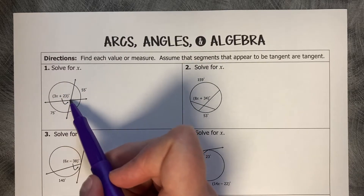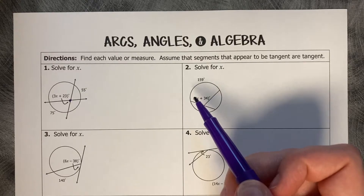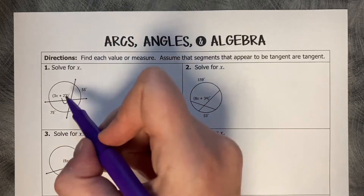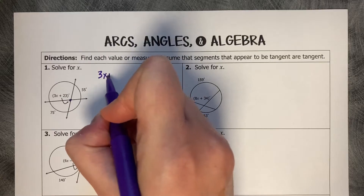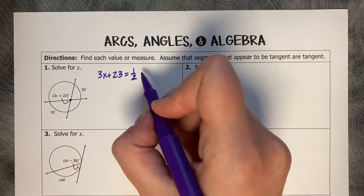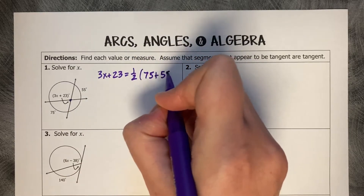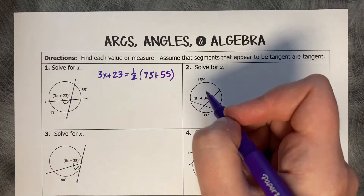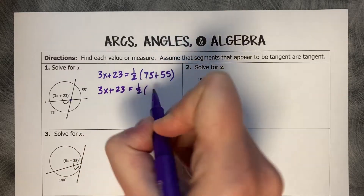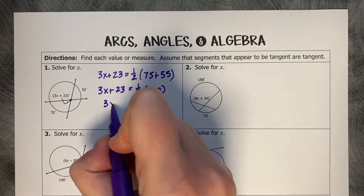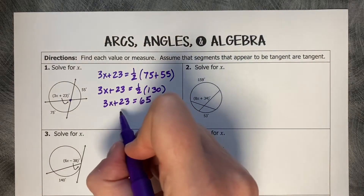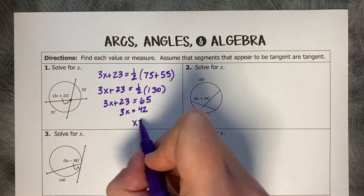x is inside of this interior intersection. If it's interior, it's add — you add their corresponding angles and cut it in half. So our interior angle is 3x plus 23, which equals one half of the sum of its corresponding angles. So 3x plus 23 equals half of 130, which is 65. Minus 23 gives 3x equals 42, so x equals 14.